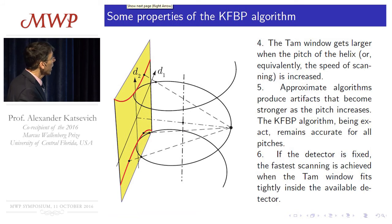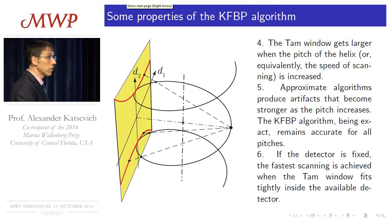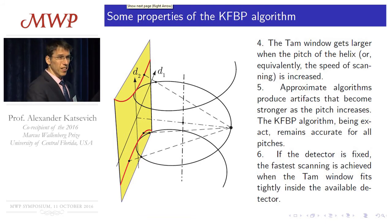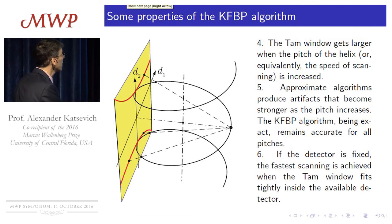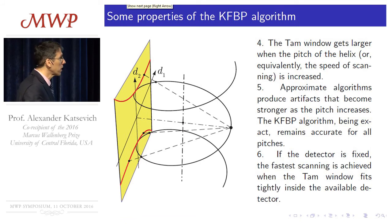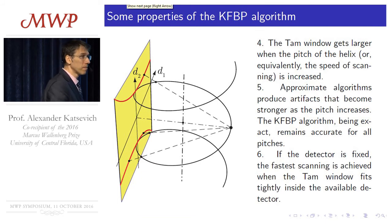From geometry it's easy to see that if you squeeze the helix — make it tighter — the TAM window gets smaller. Conversely, if you open the helix, which means faster scanning, the TAM window gets wider and taller. When you increase the pitch of the helix and scan faster, the TAM window grows. Given a detector, the fastest possible scanning consistent with theoretically exact reconstruction occurs when the TAM window fits snugly inside the detector — these corners should not go outside the detector.